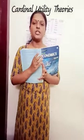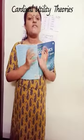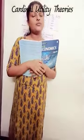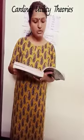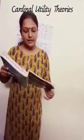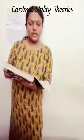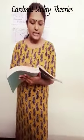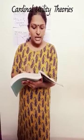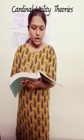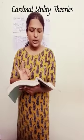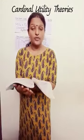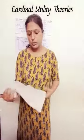If the consumer is consuming only one good, where will he arrive at equilibrium? For that, we have to look through the assumptions of this theory. The consumer is assumed to be rational, he consumes only one good, the cardinal utility approach is assumed, and the law of diminishing marginal utility operates.